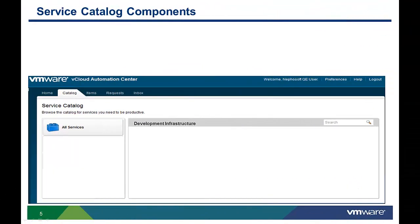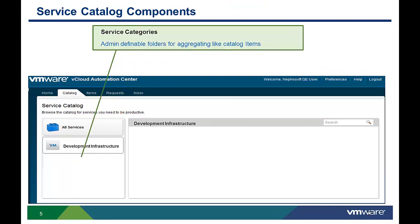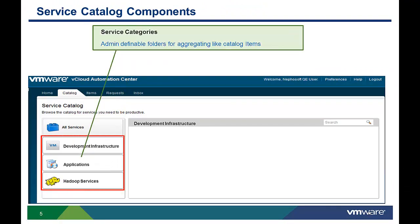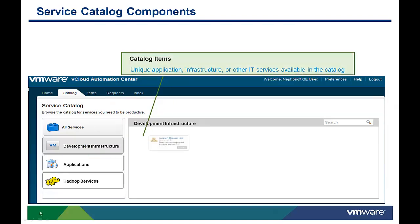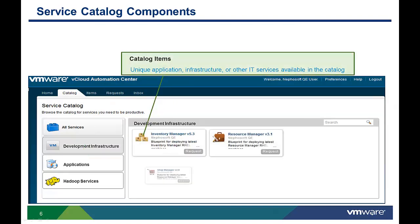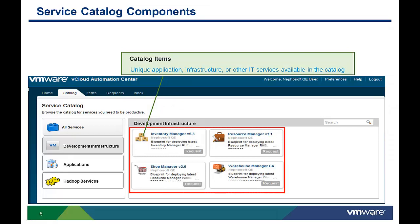Let's start by looking at some of the service catalog components. Service categories are administrator-defined groupings that can be used to subset the catalog into aggregations of like services. Catalog items are the unique application, infrastructure, or other IT services accessible in the catalog.